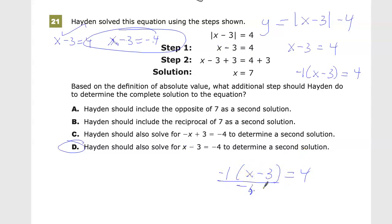Because those two will cancel, and you end up with x minus 3 is equal to negative 4.